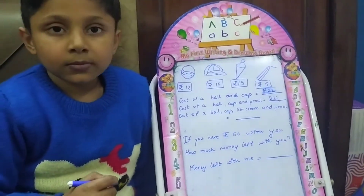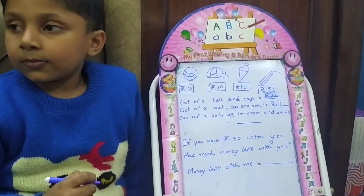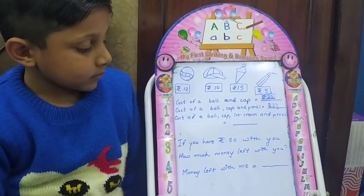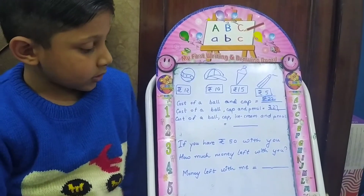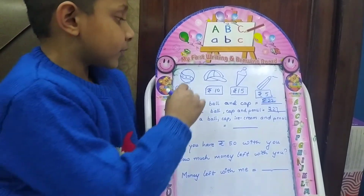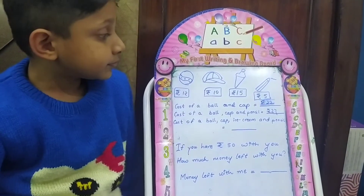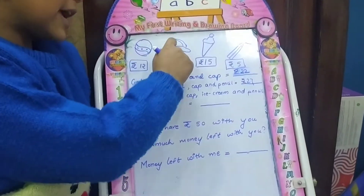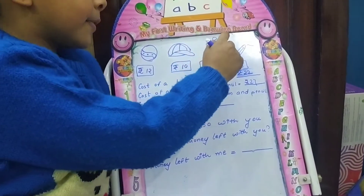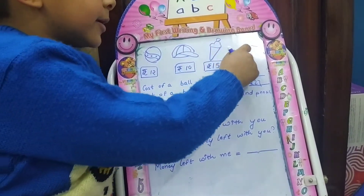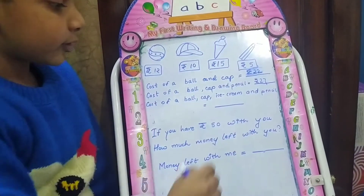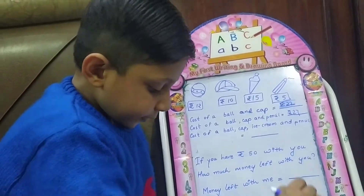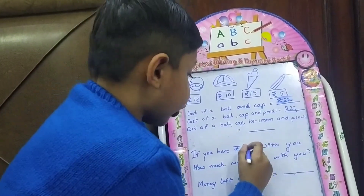Very good. Now you have to purchase all the items — a ball, a cap, an ice cream and a pencil. A ball, cap, ice cream and a pencil cost is 42.